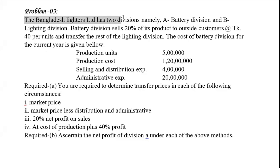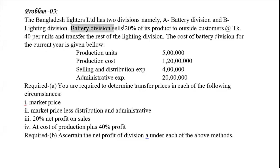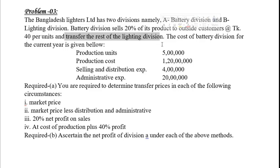Bangladesh Lighter Limited has two divisions: Battery Division and Lighting Division. Battery Division sells 20 percent of its products to outside customers at the rate of Taka 40 per unit. The remaining 80 percent is transferred to the Lighting Division.